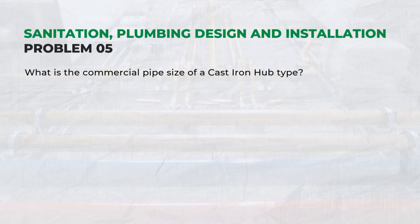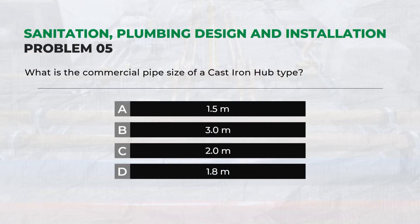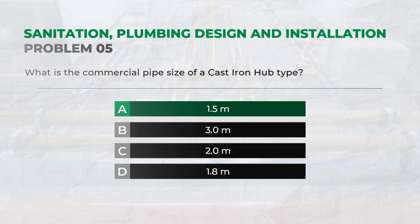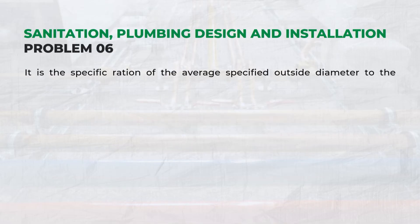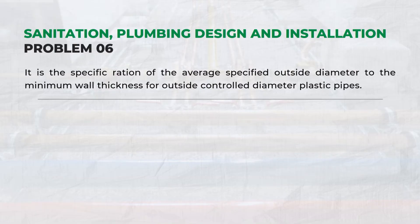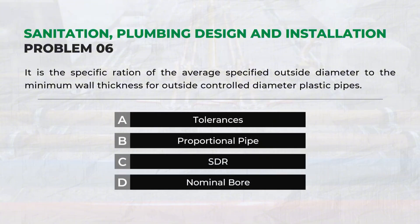What is the commercial pipe size of a cast iron hub type? A: 1.5 meters. SDR is the specific ratio of the average specified outside diameter to the minimum wall thickness for outside control diameter plastic pipes. See SDR.